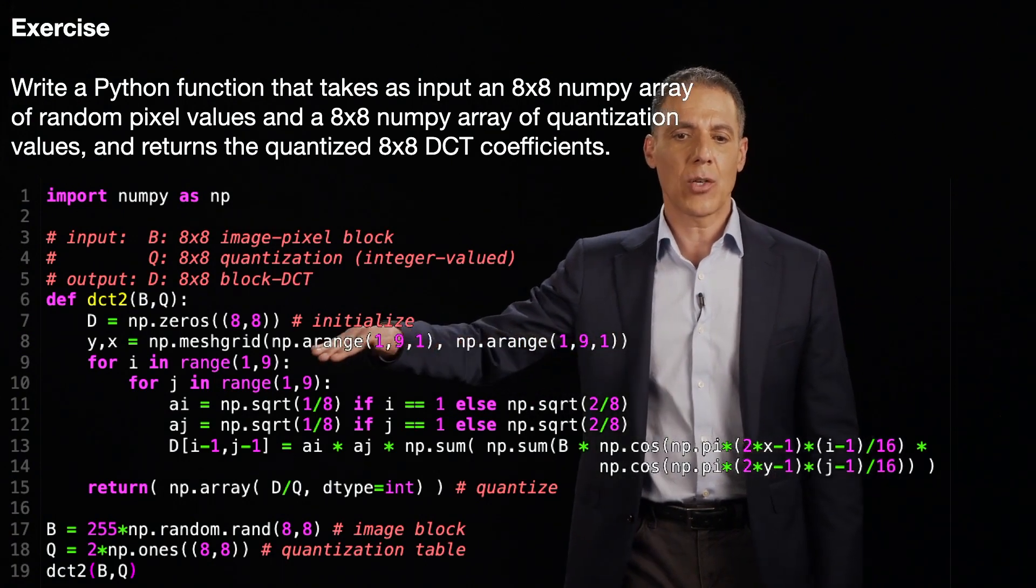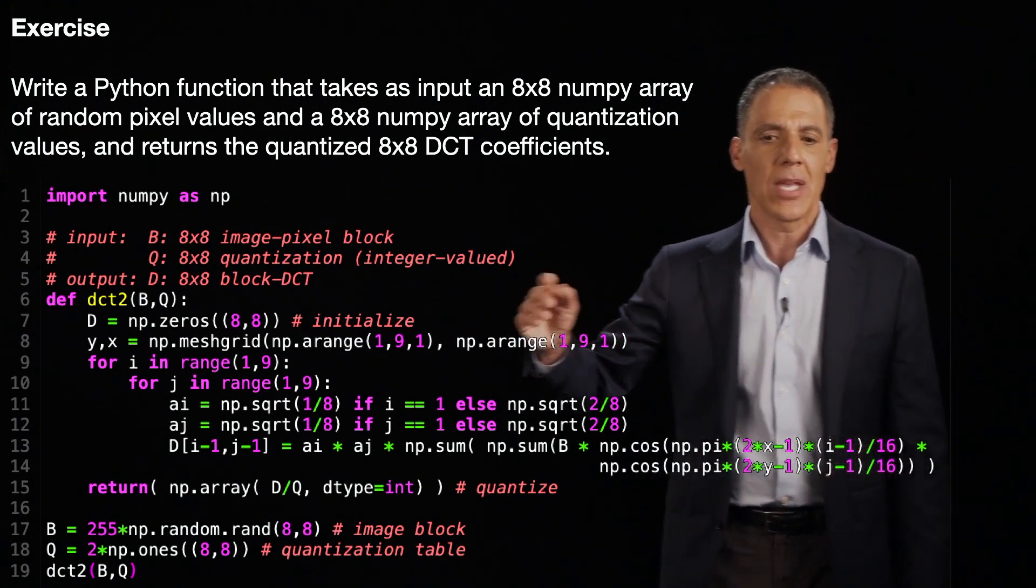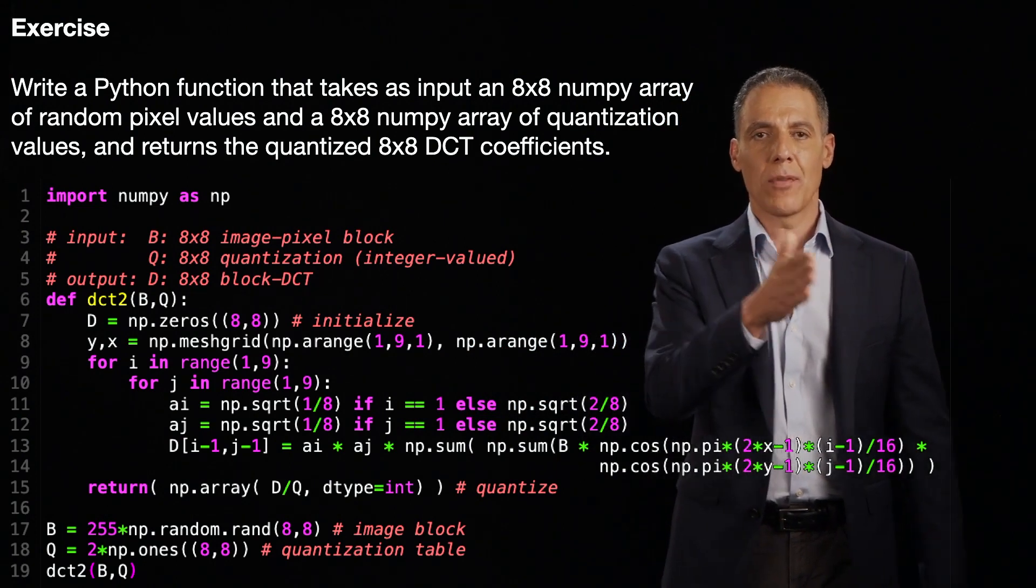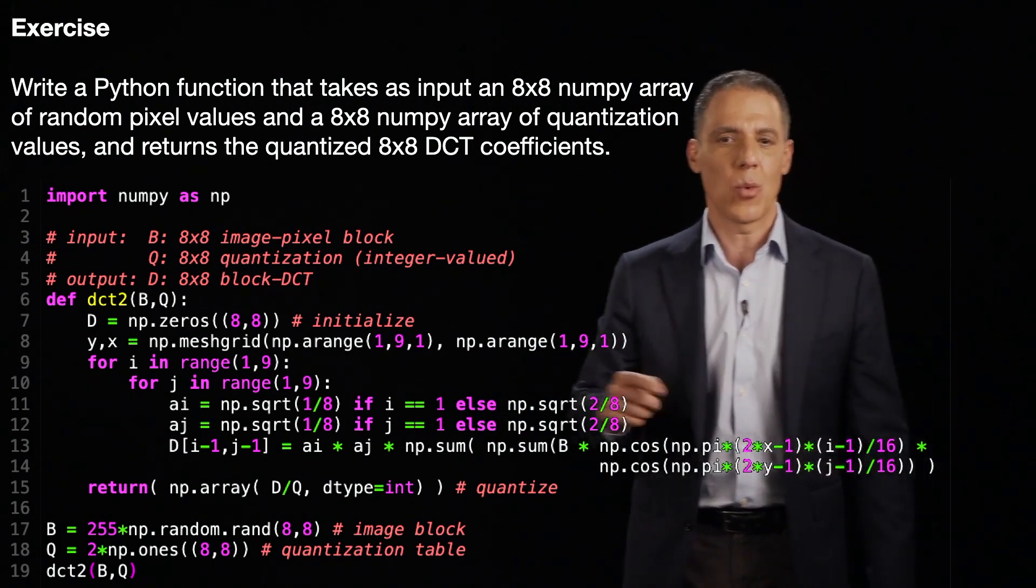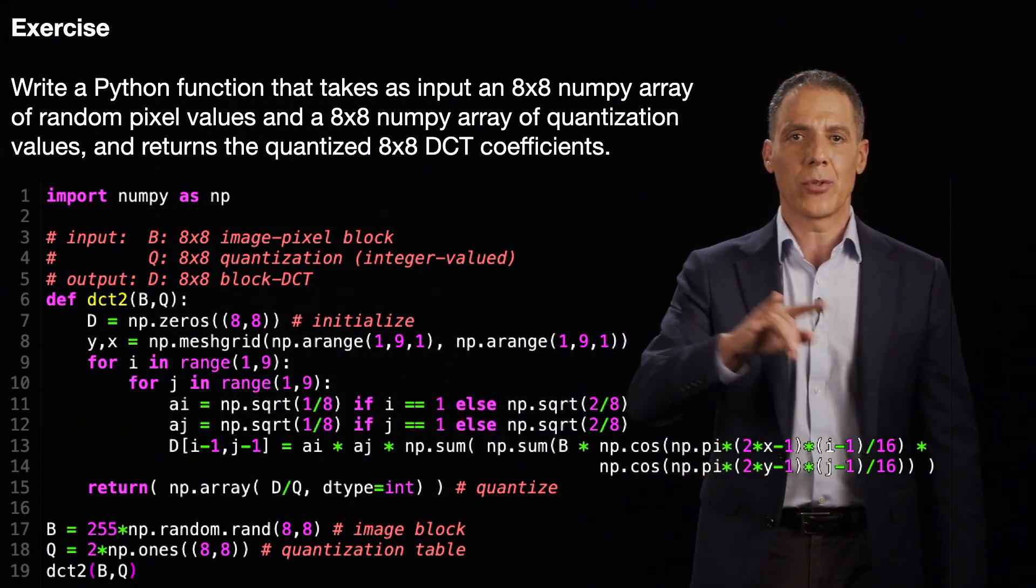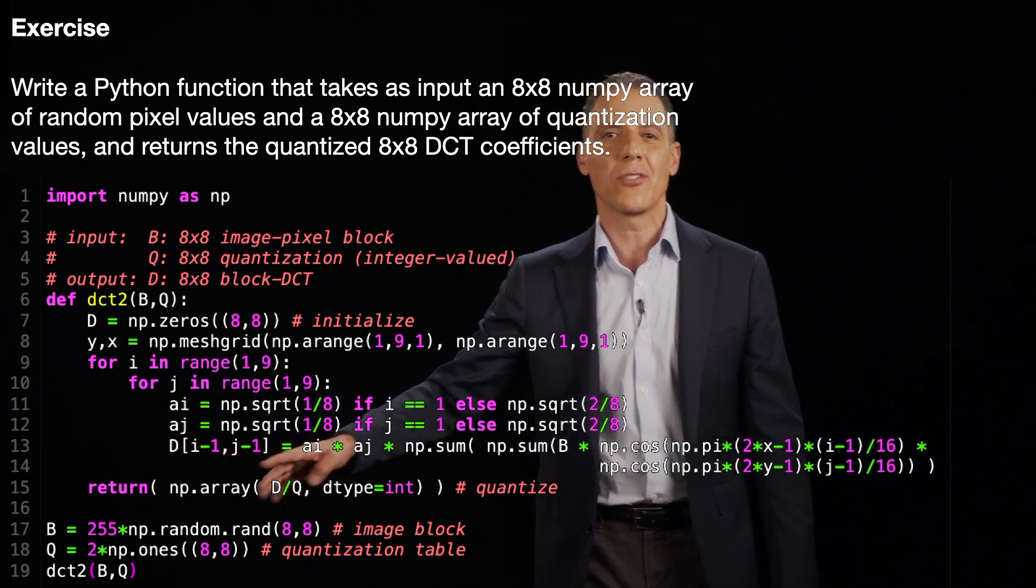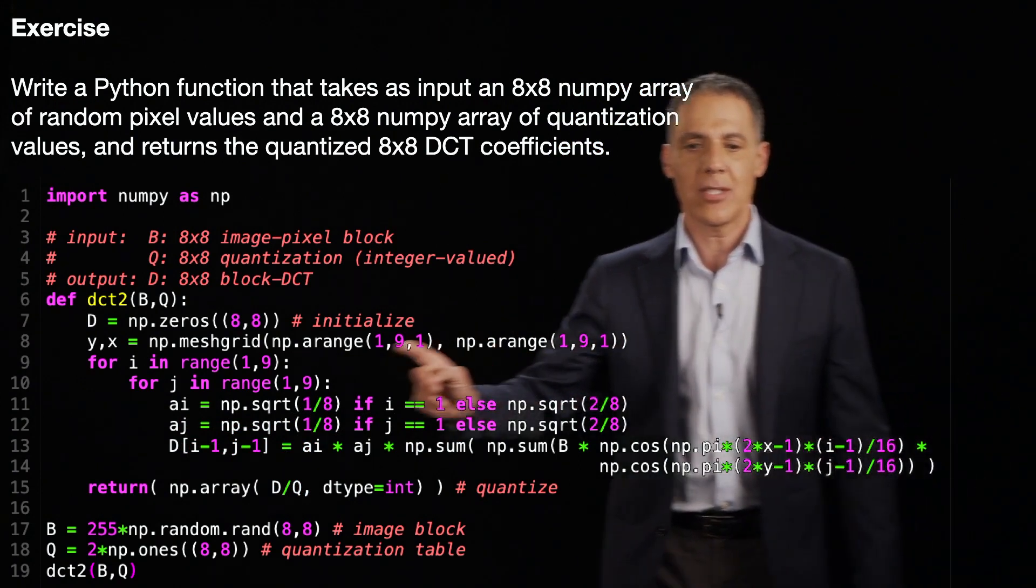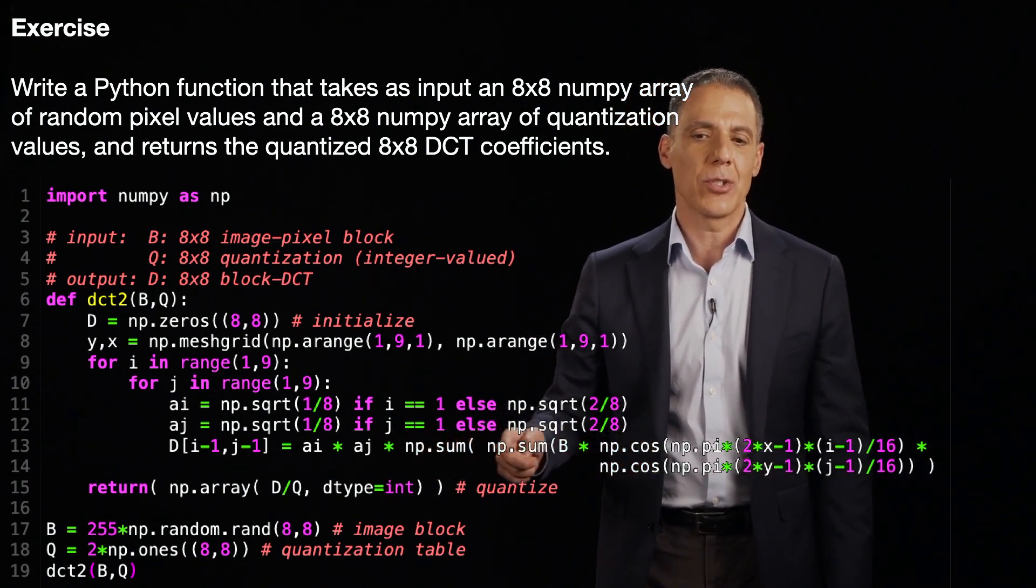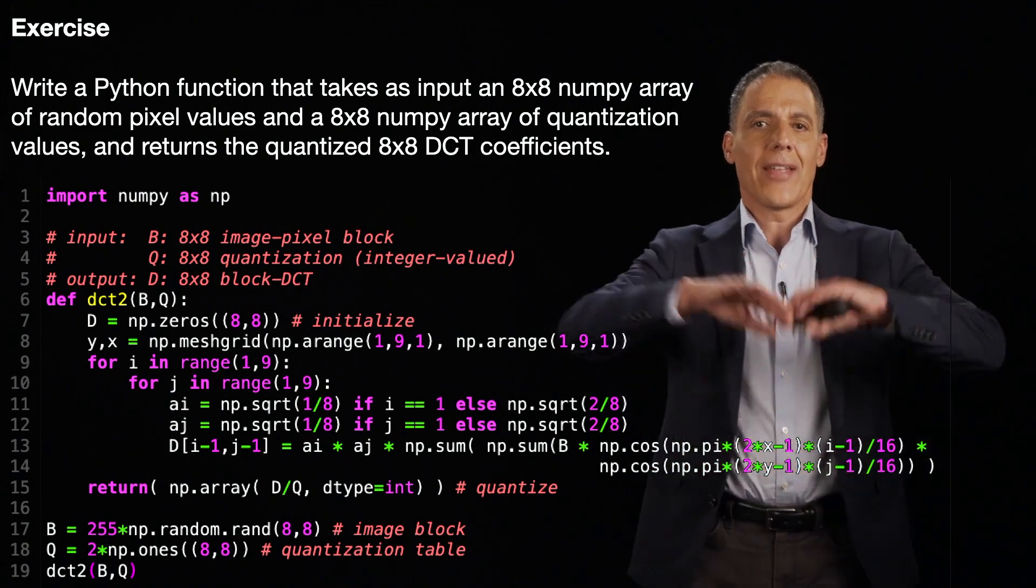There's a couple of different ways you could have done this. This is probably the most compact way. And now here is my double loop for i in range 1 to 9, for j in range 1 to 9. So i and j will have the values 1 through 8. I actually want 0 to 7. You'll see in a minute I'm going to subtract 1 when I go to index. Here's a_i and a_j as promised. It's either square root of 1 over 8 or square root of 2 over 8. And then now what I'm going to do is fill in the i jth DCT. Here I'm subtracting 1. So now I'm back to between 0 and 7. And it's simply the product of a_i a_j. And then I notice I could have done this with two for loops, but I just did it with the built-in sum function of numpy. So I take my block, I multiply it by the cosine of each of the cosines, and then I sum everything up.